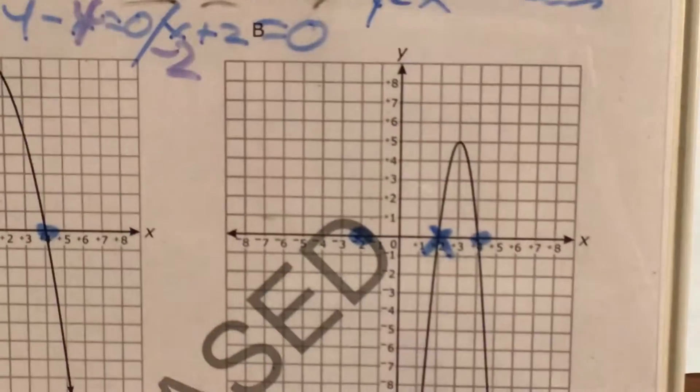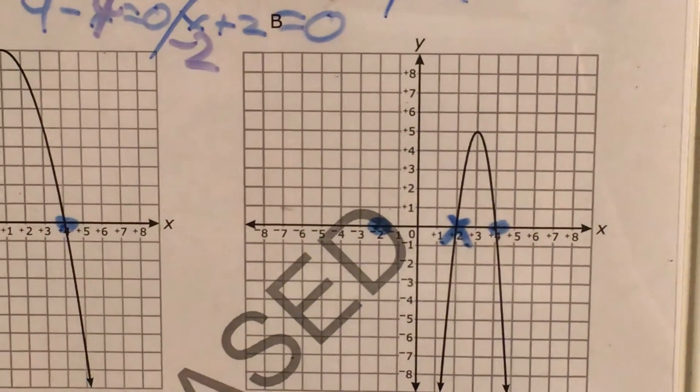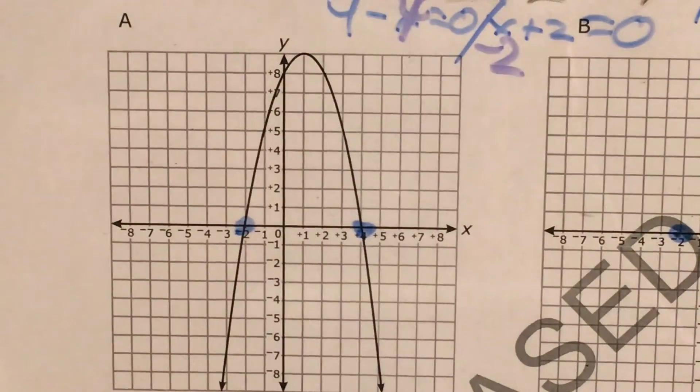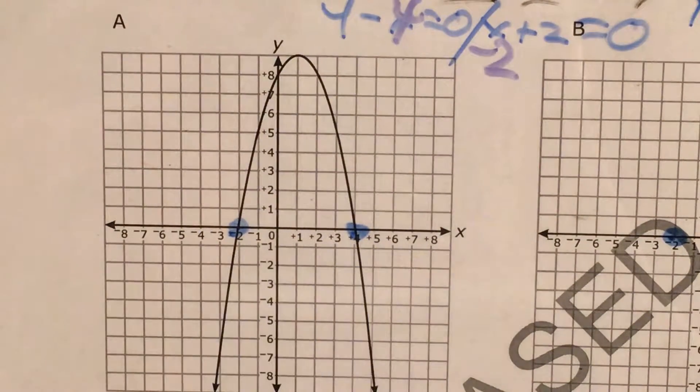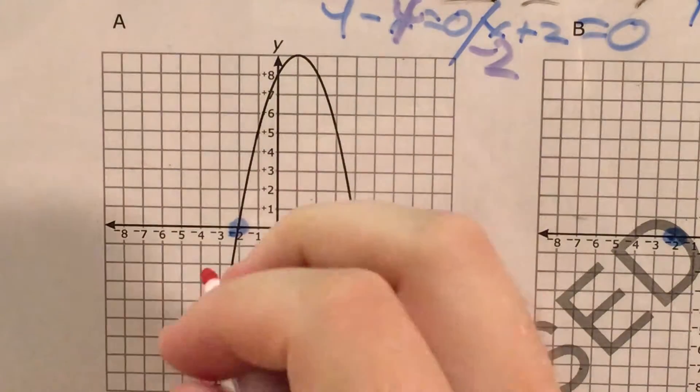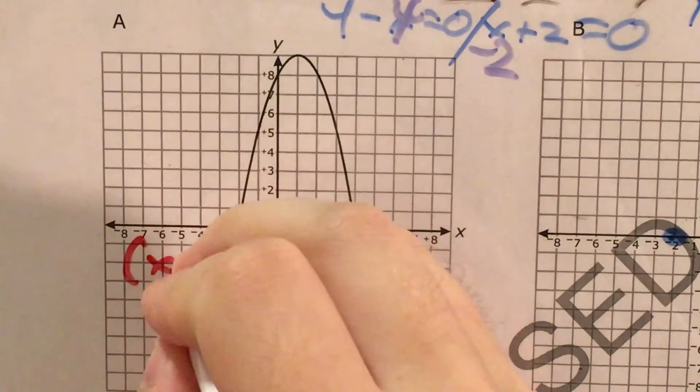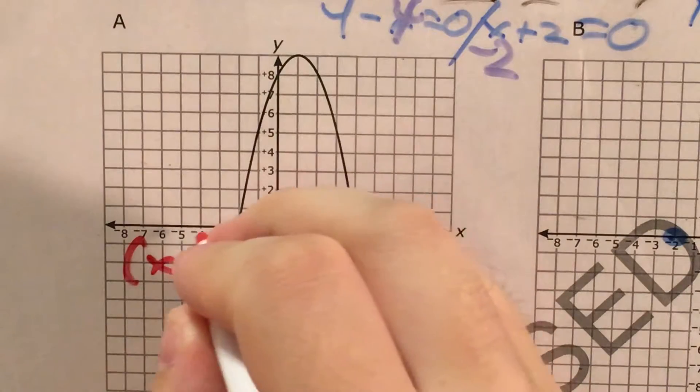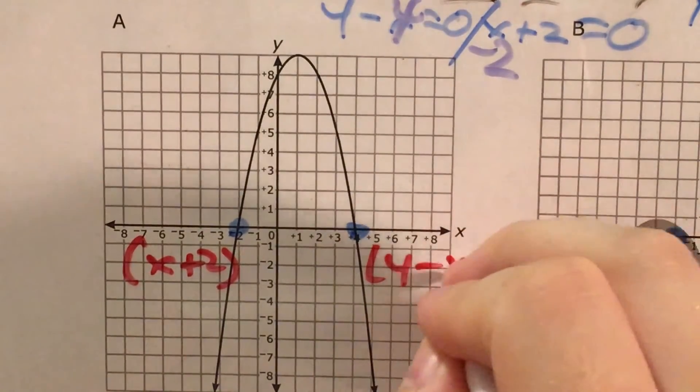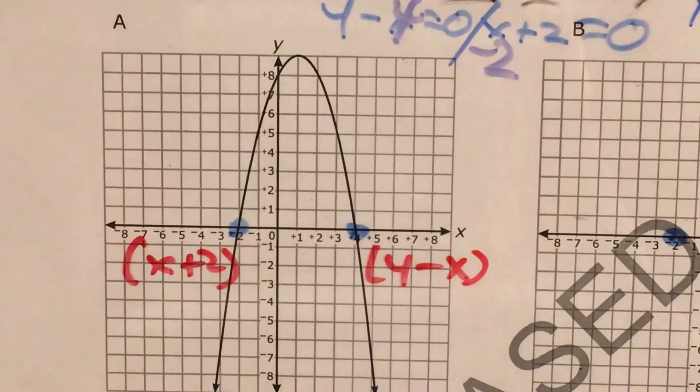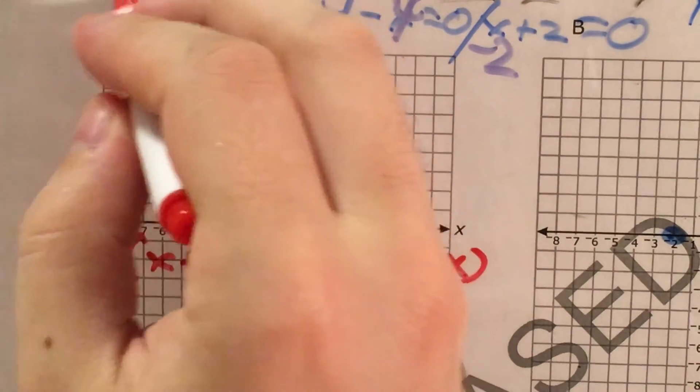Only choice A had the zeros of negative 2 and positive 4 that matched the linear factors we started with in the problem of x plus 2, which negative 2 would make equal 0, and then 4 minus x, which the number 4 would make equal 0. So, our answer is A.